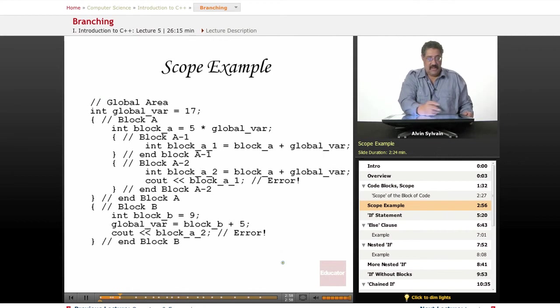So here's an example. Here we have the global area which is outside of everything and we've defined a variable global_var equal to 17. Here's block A beginning which stretches to here and here's block B which stretches from there. So inside block A we've got int block_a equal to 5 times the global_var. So that'll be 17 times 5 whatever that adds up to. I'm not going to work it out.